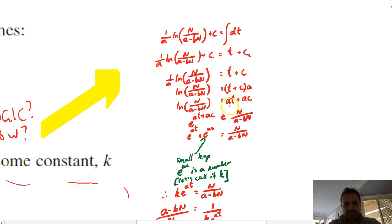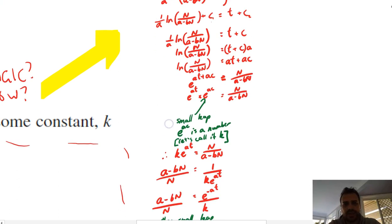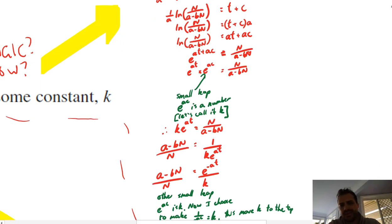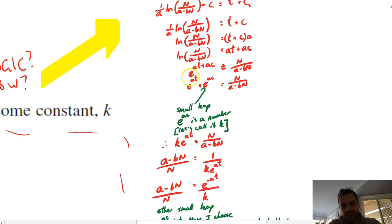And then writing it in exponential form. Because this is ln base e n over a minus b n. I can take the base e, raise it to the power of this, and all of this stuff appears on the other side. Now, this is probably a small leap on, actually, this next line is not too bad. E to the a t plus a c. We can split that up as e to the a t times e to the a c.